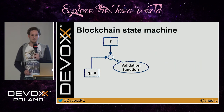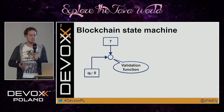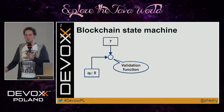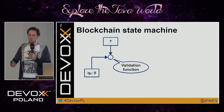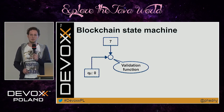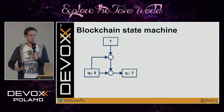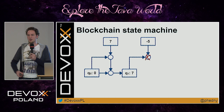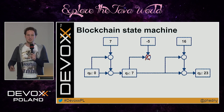In a blockchain we extend the state machine concept by adding a validation function, which takes the same inputs — the current state and a message — but outputs a boolean: yes or no. It says whether this message is valid and allowed to be acted upon in the current state. For example, if the validation function requires the message value to be higher than the current state value, then 7 is higher than 0 so it's allowed; minus 5 is smaller than 7 so it's blocked; 16 is higher than 7 so it's allowed.